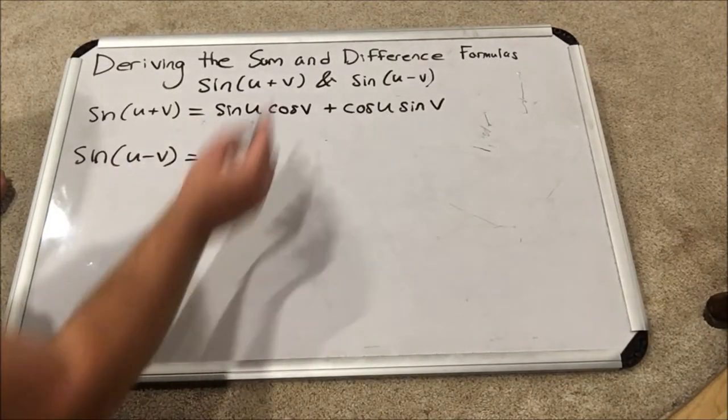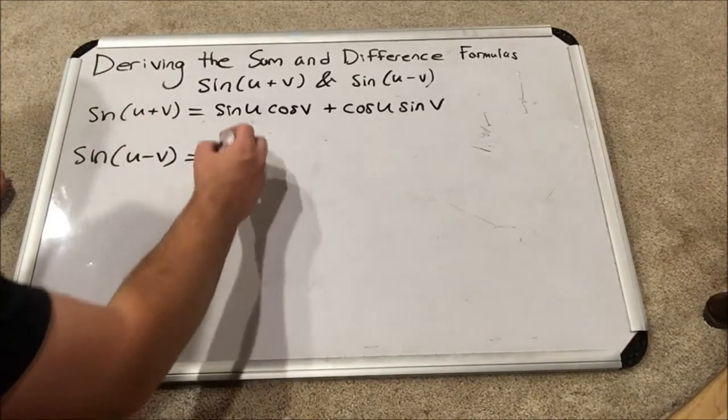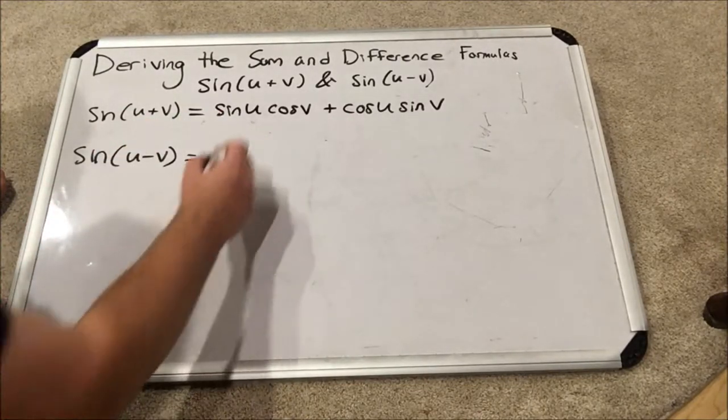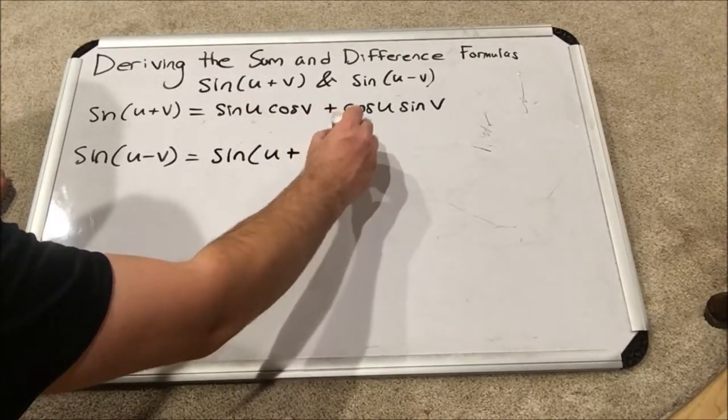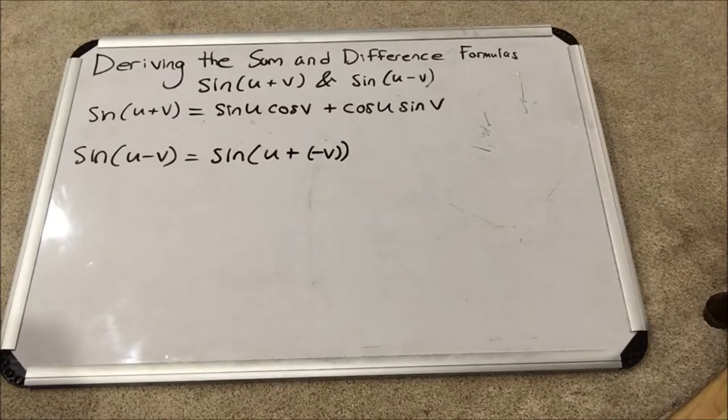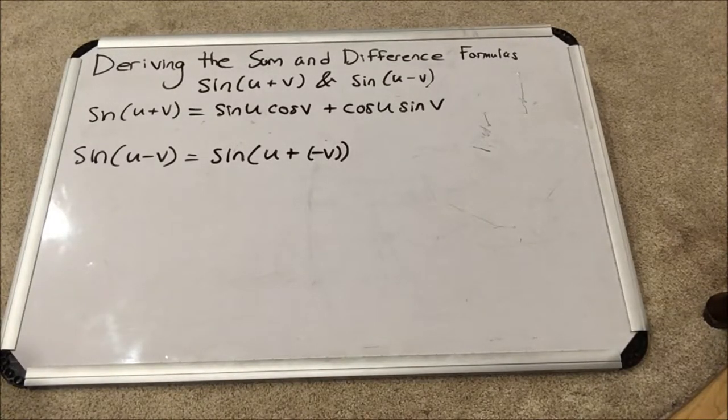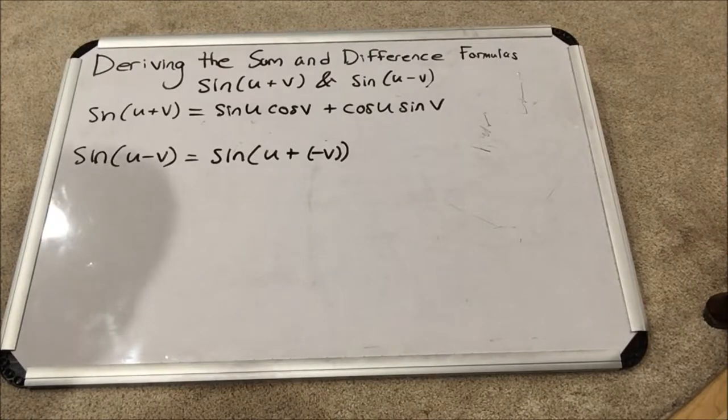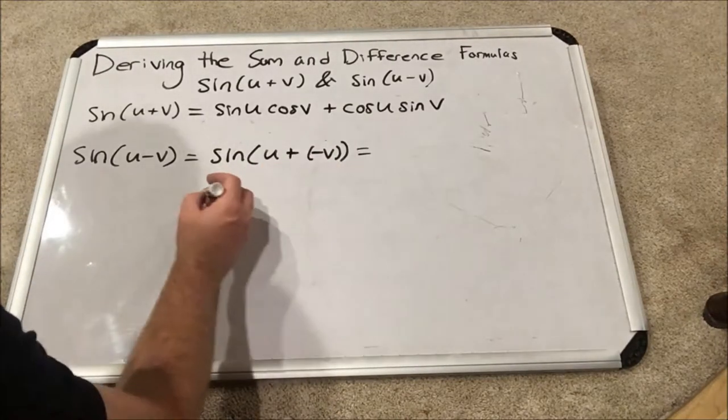Now, I need a formula for sine of U minus V. And I'm going to do it by using the formula I just derived. Here's how I'm going to do it. I need a plus in my formula in order to use what I've already derived. So, I'm going to rewrite the sine of U minus V as the sine of U plus negative V.